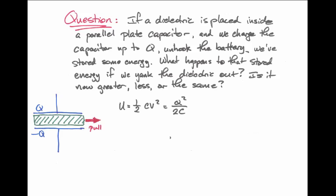It's actually to our advantage to use the second expression for potential energy stored, which is Q² over 2C. Because in this case, once we've disconnected the battery from the capacitor, the charge will remain constant. There's always that amount of charge sitting on the surface of the capacitor plates.